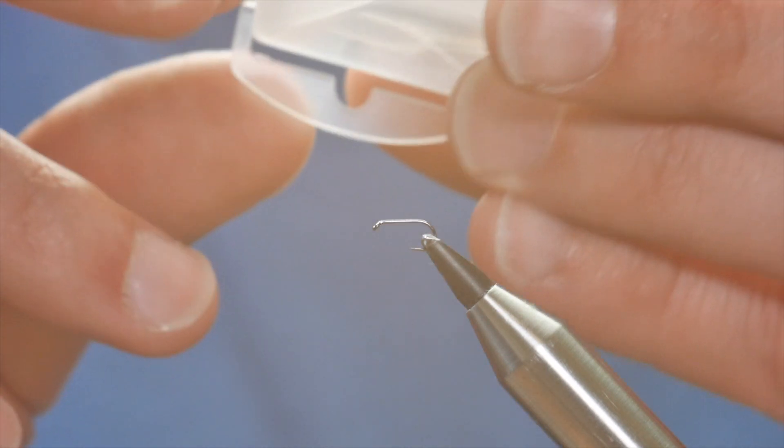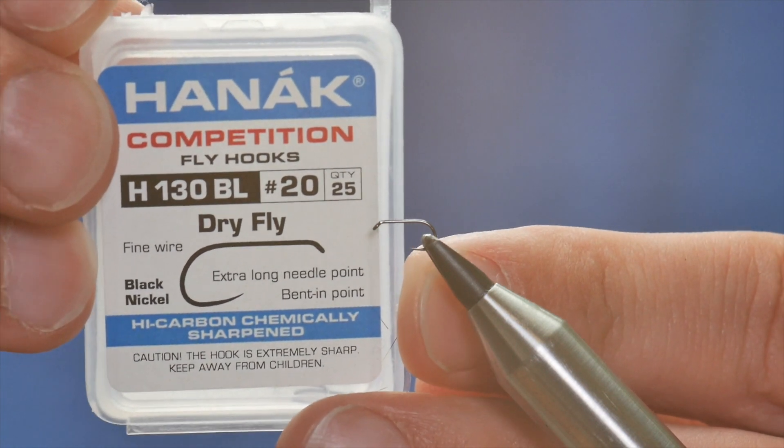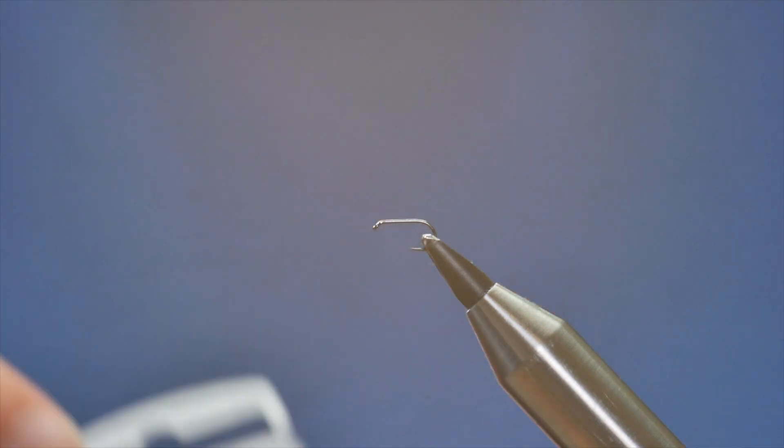So in the vise, if you can just about see it, this is a Hanak H-130 barbless hook and it's at size 20. Now this is about as small as I go with tying and fishing, mostly because when I'm by the river, even with glasses, I can't see a fly to tie it on much smaller than this.